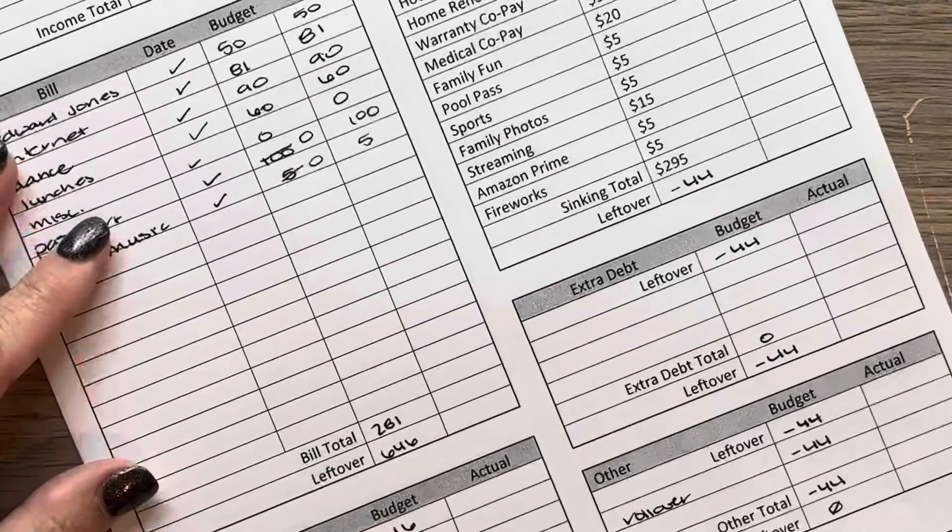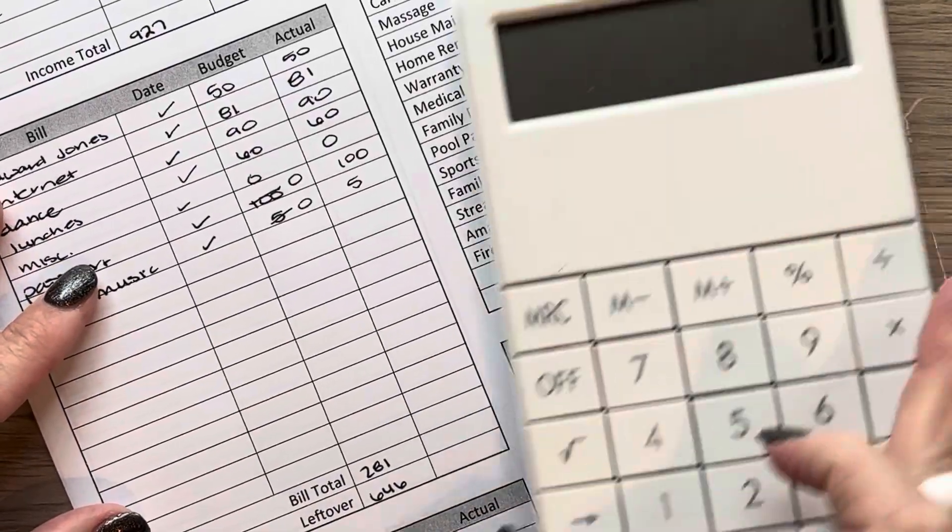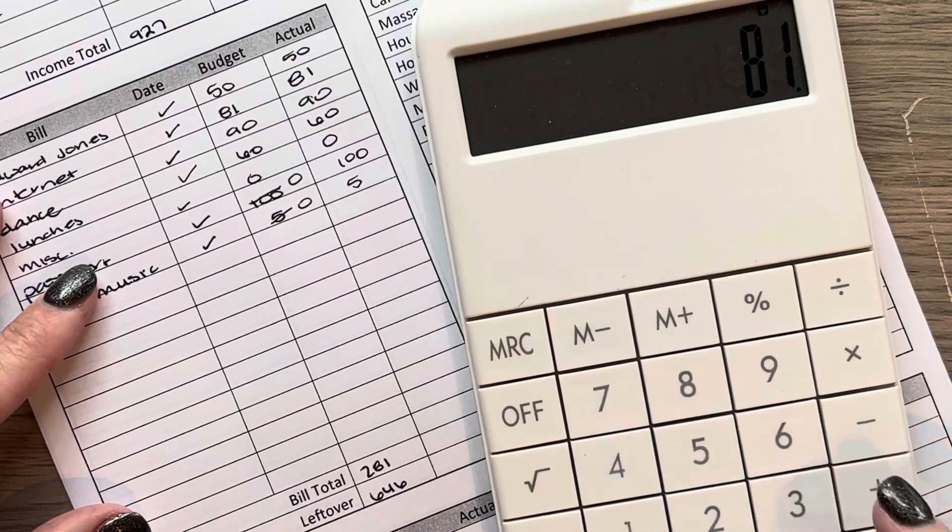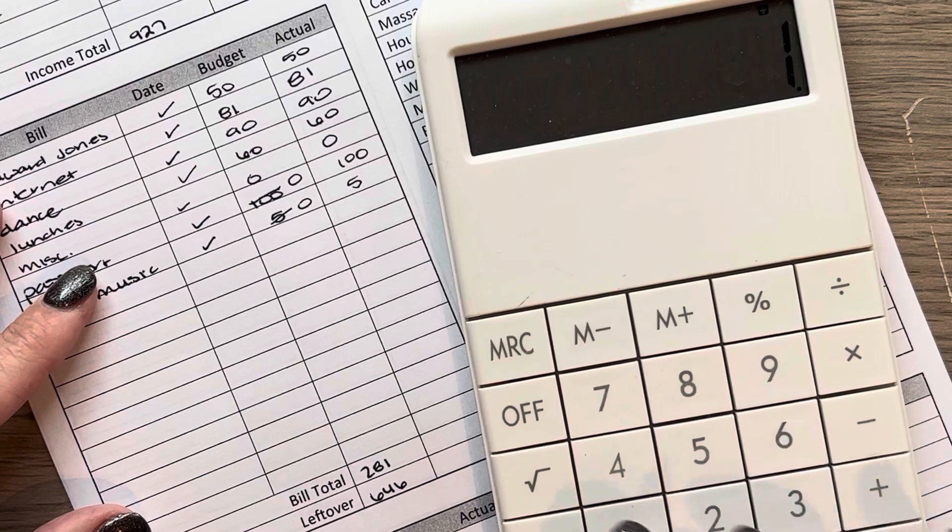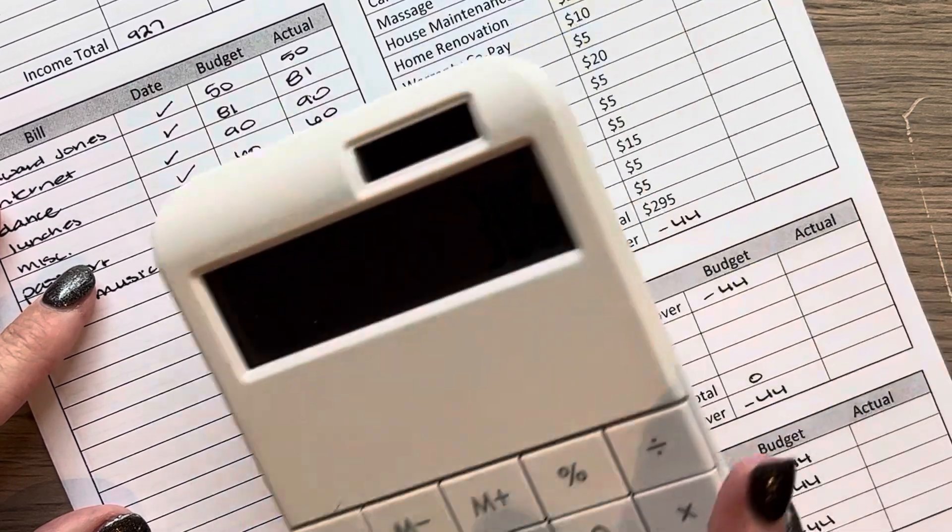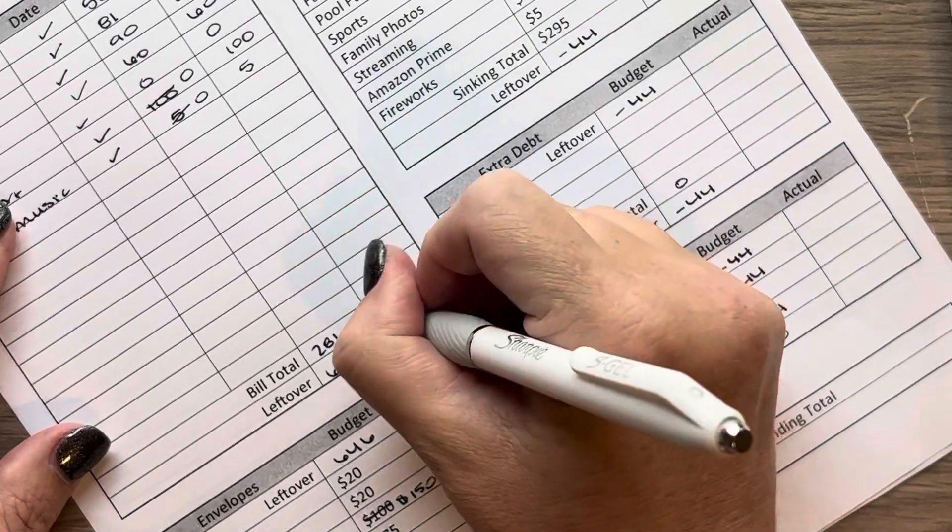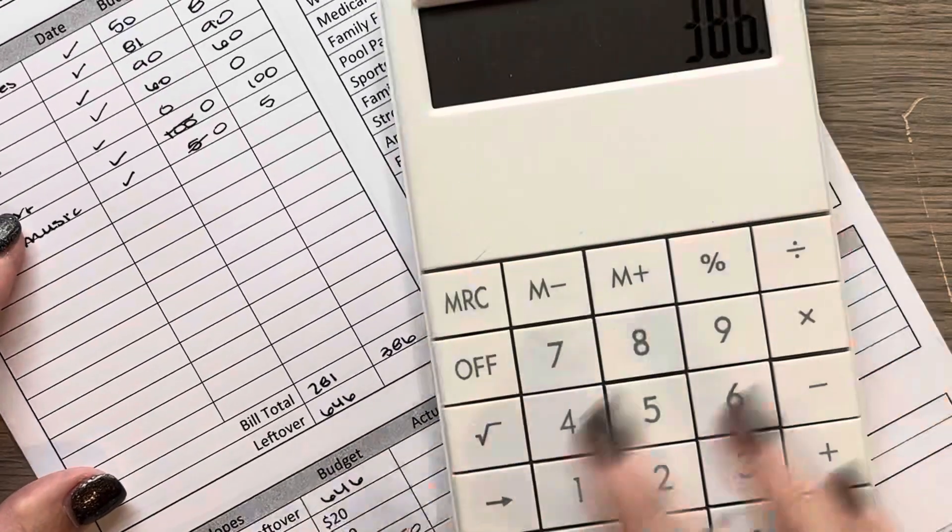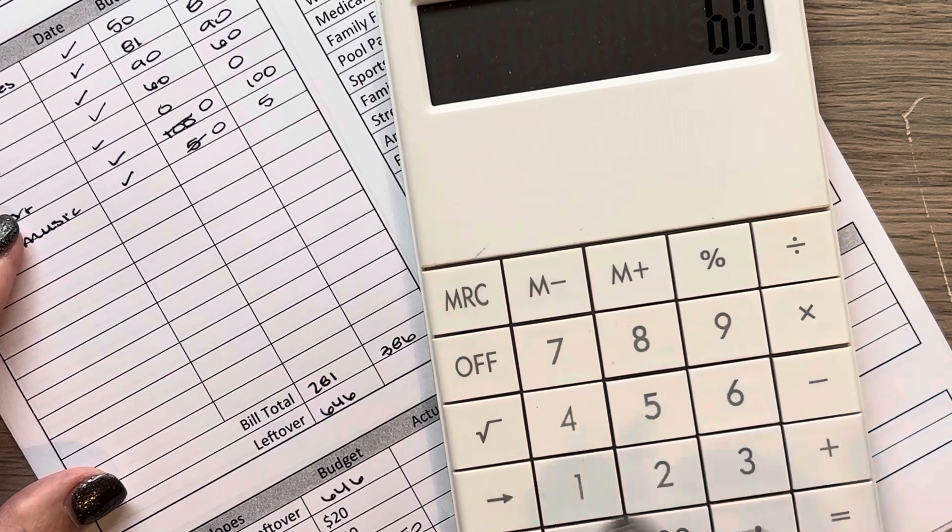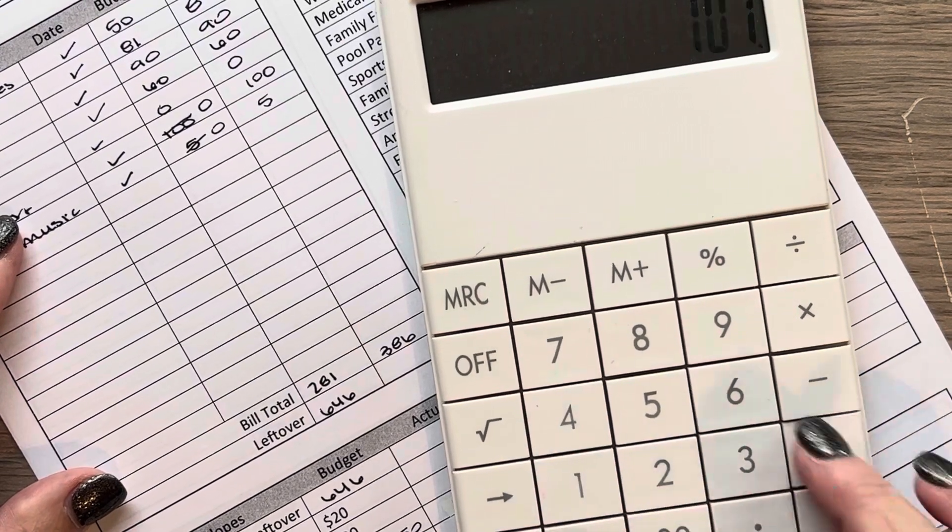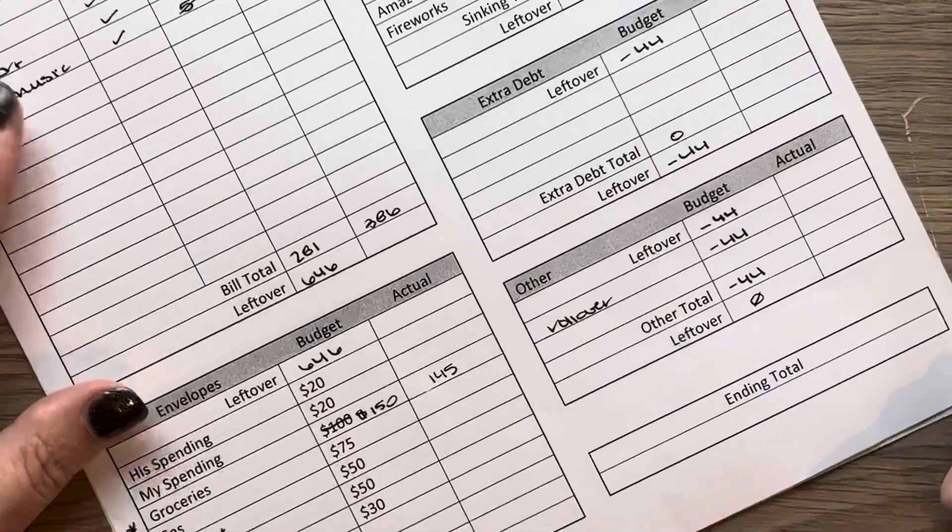So I'm going to go ahead and total these up. So it comes out to $386. I want to double check that because I just want to make sure. Yes. $386. Okay.